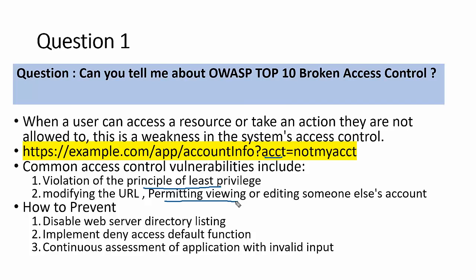To prevent broken access control: first, disable web server directory listing so users can't access drives without permission. Second, implement a deny-by-default function — if you try to access files not on the approved list, you're automatically redirected to the home page or denied access. Third, perform continuous assessment regularly to ensure applications comply with the organization's security baseline, and apply proper input validations on both server and client sides.